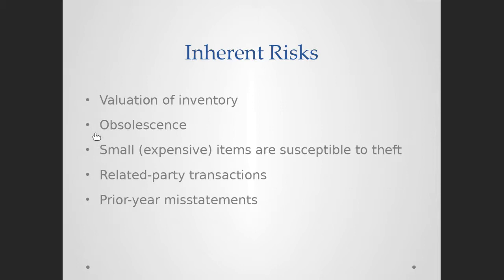The next inherent risk is obsolescence of inventory. If the client has items in inventory that are obsolete — meaning they cannot be sold anymore because they're out of date, out of fashion, or the technology is too old — those items should be removed from the balance sheet and the loss should be recognized. Third, small expensive items susceptible to theft: for example, if your client is in the diamond industry, a handful of diamonds could be worth a massive amount and can be stolen very easily, which could manipulate their inventory records.